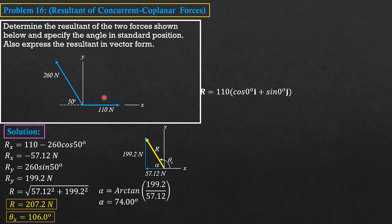For the second solution, we express each force as a vector then add them vectorially. For vector F1, the angle with the x-axis is 0°, so F1 = 110(cos 0° i + sin 0° j) = 110i Newtons. The second force F2 = 260 makes an angle of 180° − 50° = 130° with the positive x-axis, so F2 = 260(cos 130° i + sin 130° j).